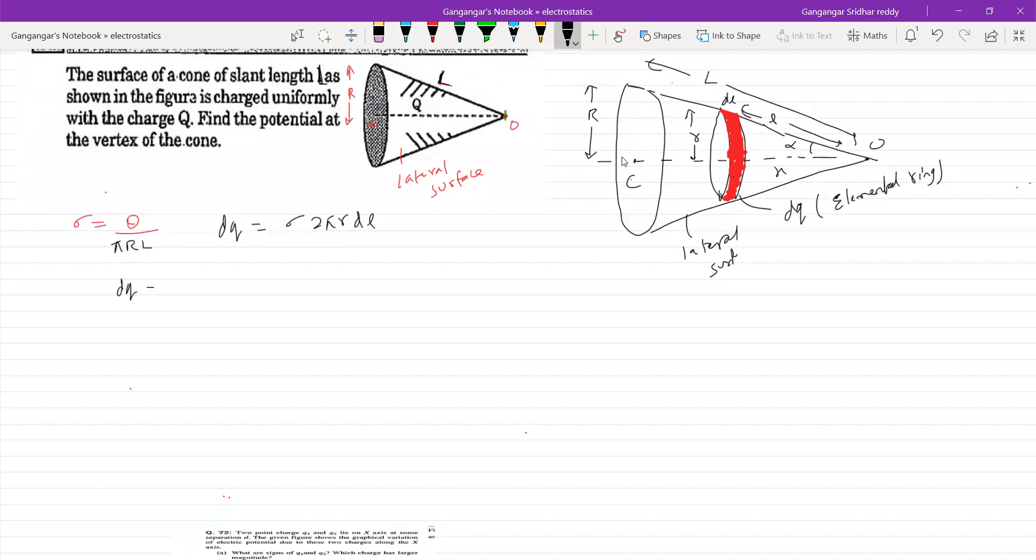So 2 pi sigma into 2 pi R into DL. So let me substitute all the values. So DQ is equal to sigma is Q by... What is R? I think we assumed R. So one more thing. Sine alpha will be R by L. So this will become sigma equal to Q by pi L squared. Sine alpha will be R by L. R equal to L sine alpha. So this will be pi. So let me substitute the value of DQ now. So Q by pi L squared sine alpha, 2 pi, one more here sine alpha. You can notice R by X. So this will be X sine alpha. This will be DL.